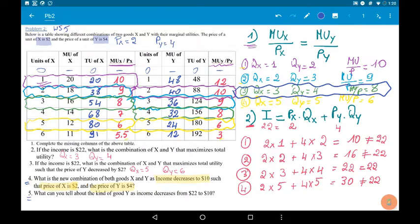Okay, we've already solved questions 1, 2, and 3. In question 2, the price of X was $2, price of Y was $4, the income was $22. And the solvings you're seeing are regarding question 2.